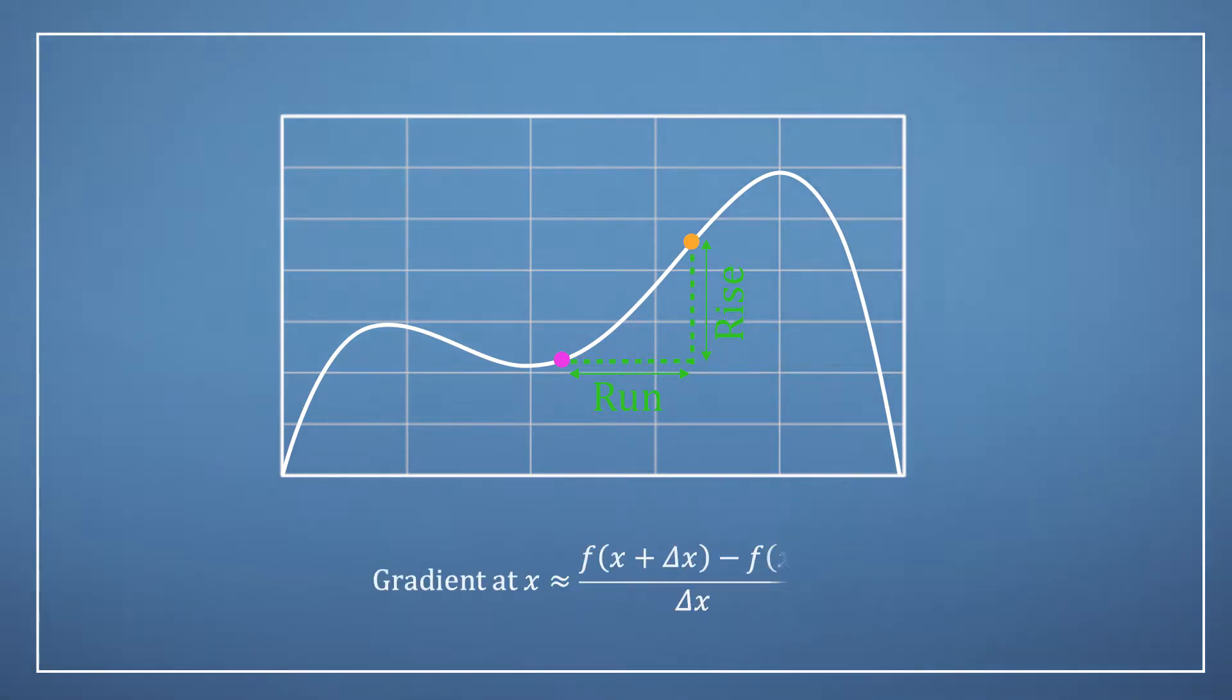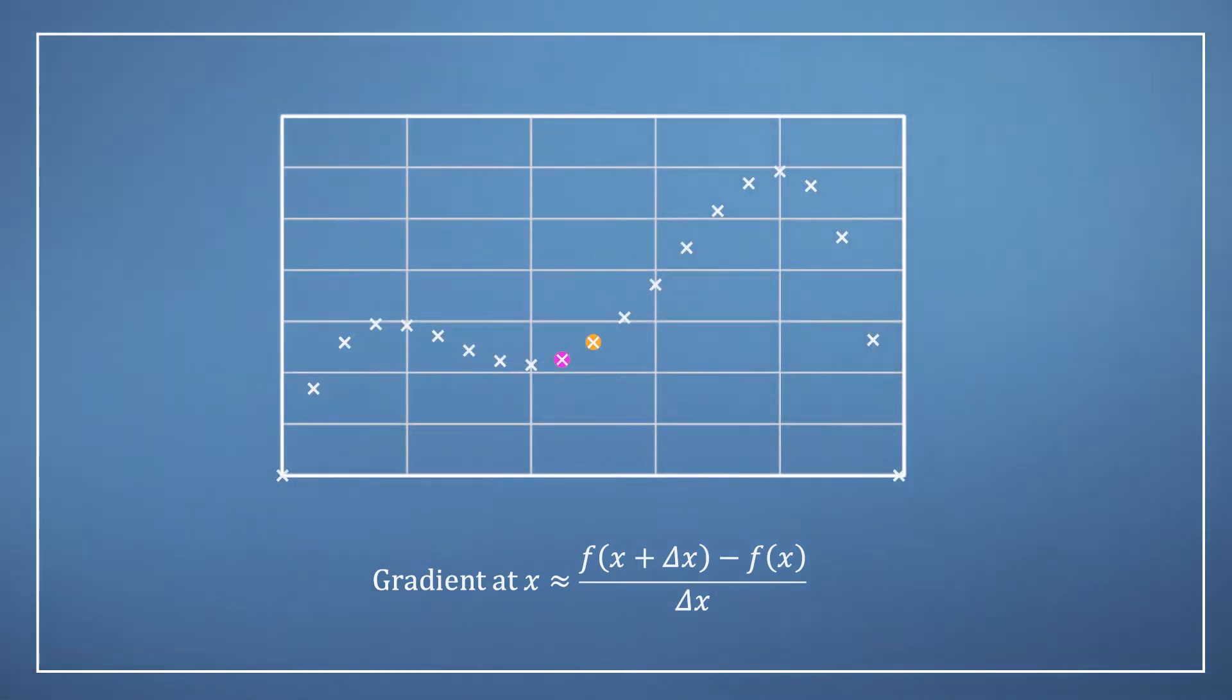We started by using an approximation based on the rise over run calculated over a finite interval and then looked at what happens as this interval approached zero. All we're doing with the finite difference method is accepting that we're not going to work out the value of the function at every single point in space. So we're just going to use the points that we do have and build an approximation for the gradient based on that. In the example shown here, we have already calculated lots of points on this one-dimensional function, but clearly that's not going to be practical for higher-dimensional scenarios.